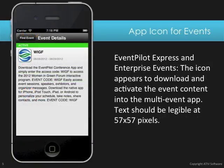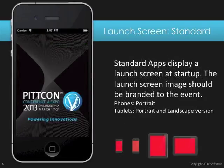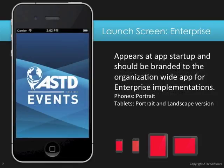For events within EventPilot Express or Enterprise apps, the thumbnail version of the icon appears as well for downloading and activating events into the Shell app. Once the app is installed, it opens by displaying your launch screen. It should be beautiful and match the branding of your conference. The launch graphics are required for the phone and taller iPhone in portrait mode, tablet and landscape sizes. Enterprise apps also display the launch graphic, but the image should be branded to your organization since the app can load multiple different events into it.